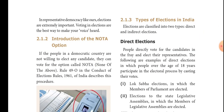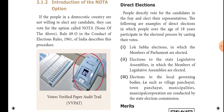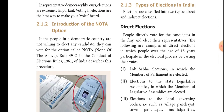Another important feature is the introduction of the NOTA option — None of the Above. It was introduced under the 1961 Conduct of Elections Rules, specifically Rule 49.0. NOTA means none of the above: if you do not want to elect any candidate, you can select NOTA.